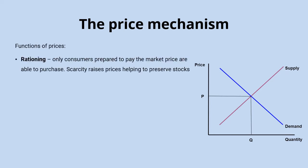The first of those is the rationing function, which means that only consumers who are actually prepared to pay the market price for a product are going to be able to purchase it. That level of scarcity raises prices, which helps to preserve stocks of a product. This is how resources are allocated when they're scarce — it helps determine which consumers can access them based on their willingness and ability to pay.